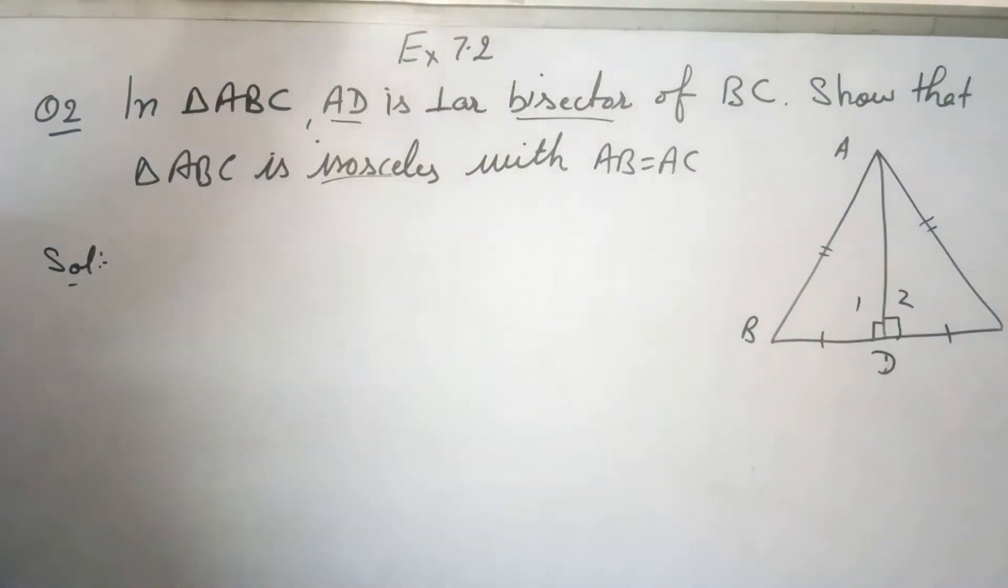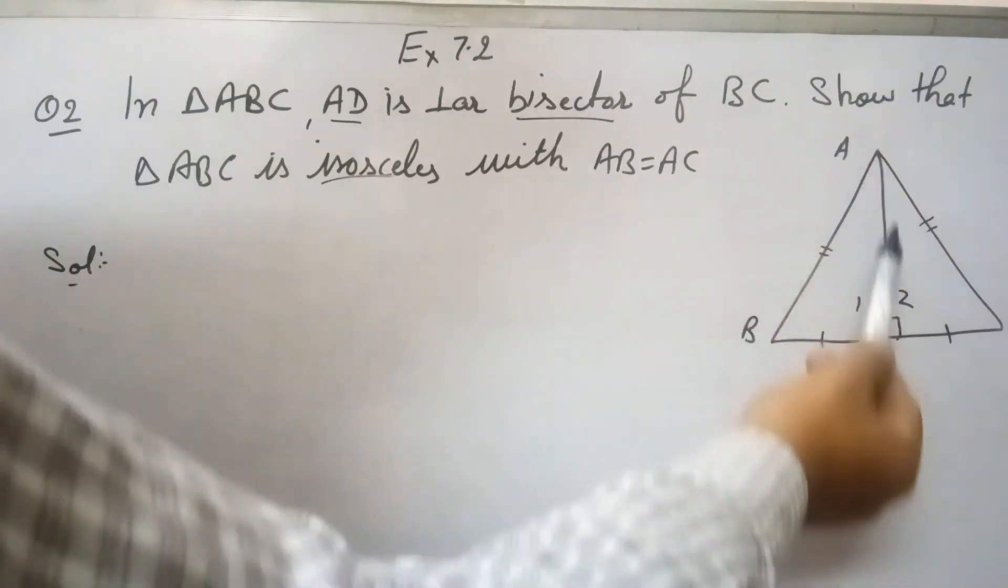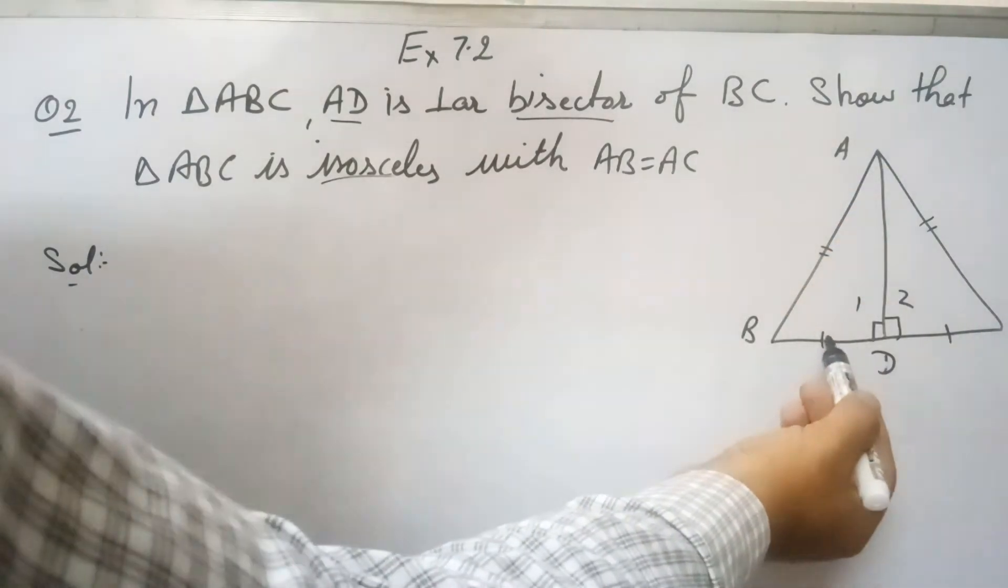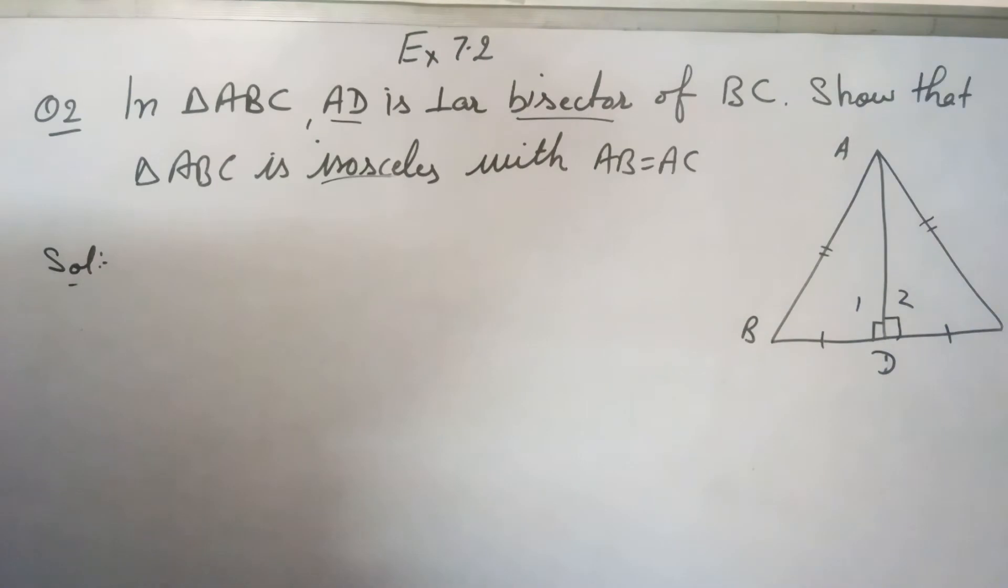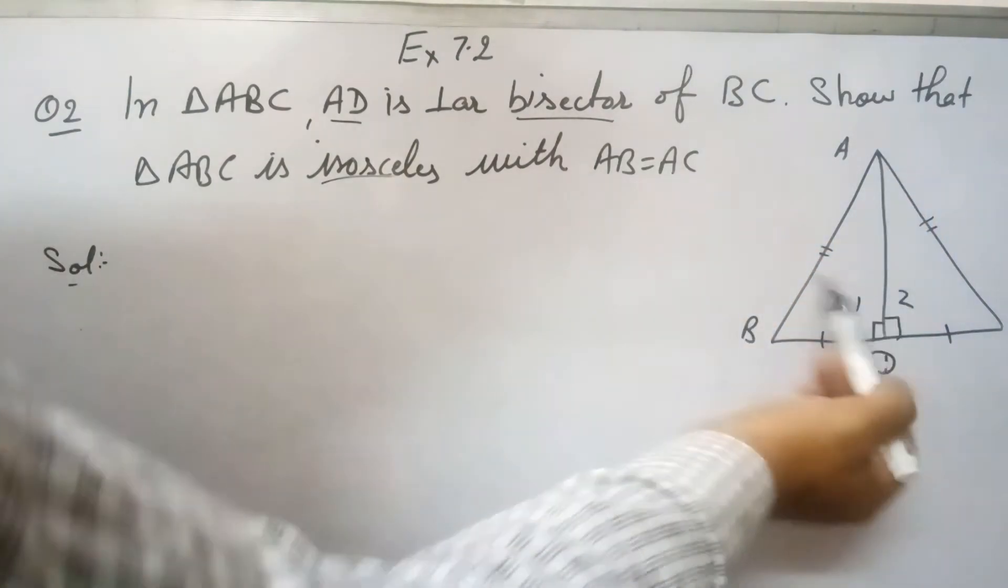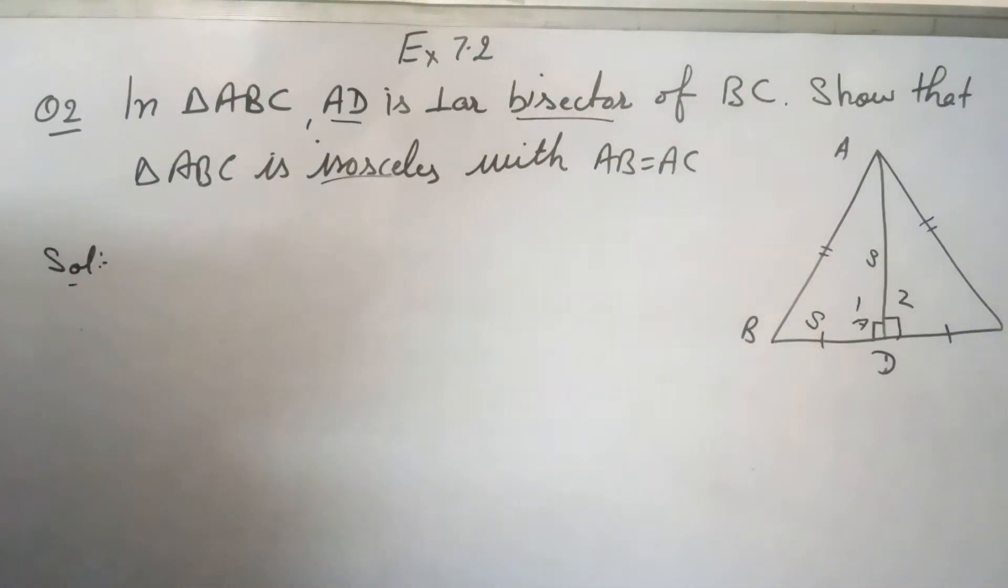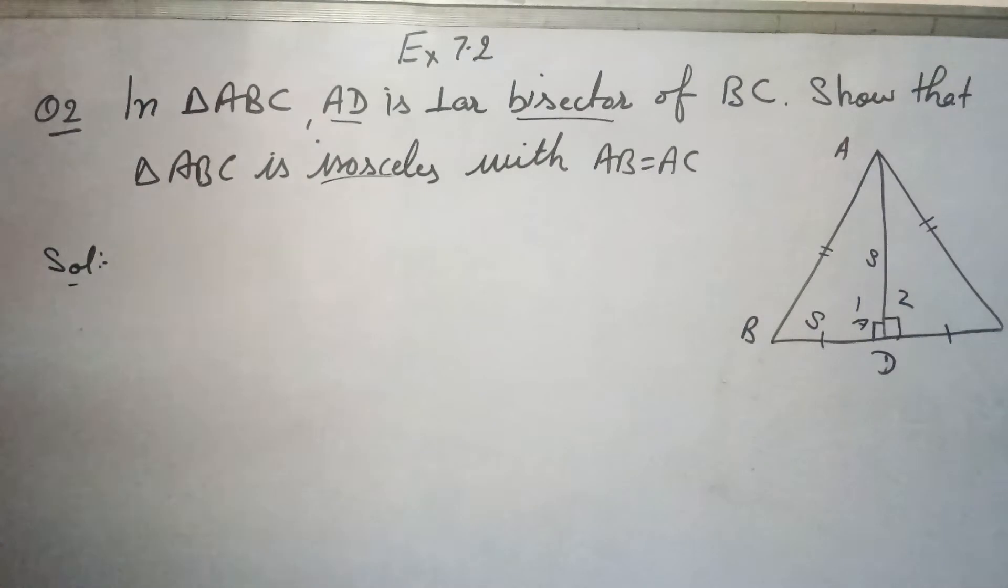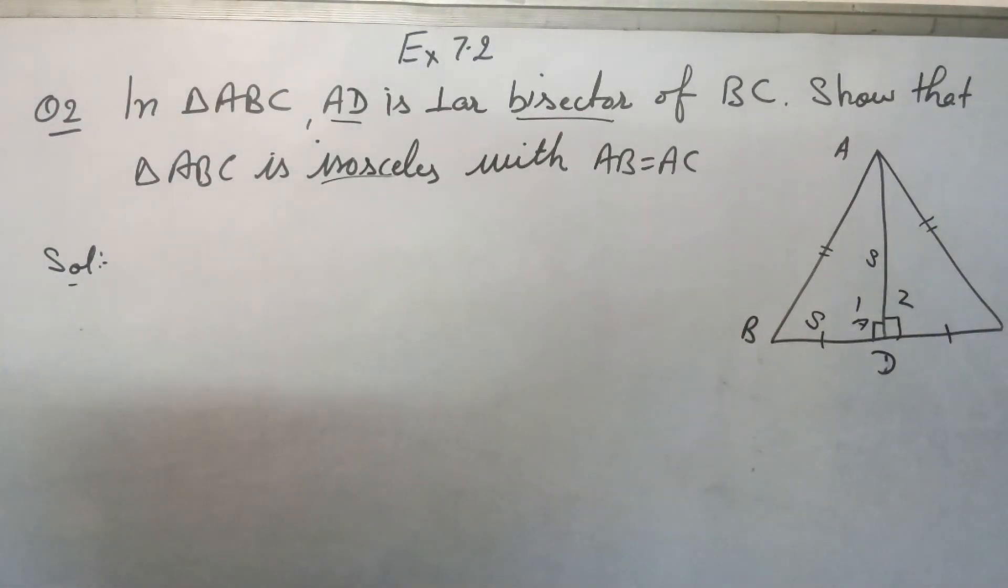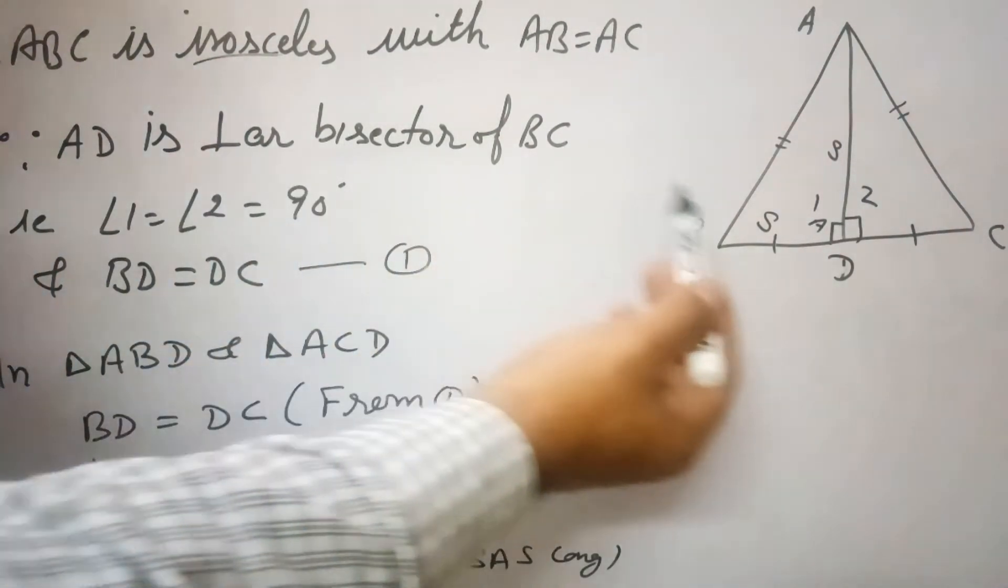Now from this, you see two triangles here: ADB and ADC. Here BD equals DC, angle 1 equals angle 2, and AD is common. So this is side-angle-side congruency condition. According to this condition, these two triangles are congruent, and then we can say that AB equals AC by CPCT. So triangle ABC is isosceles triangle because AD is perpendicular bisector of BC.